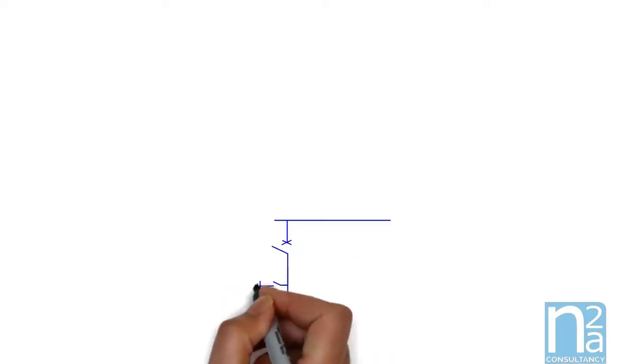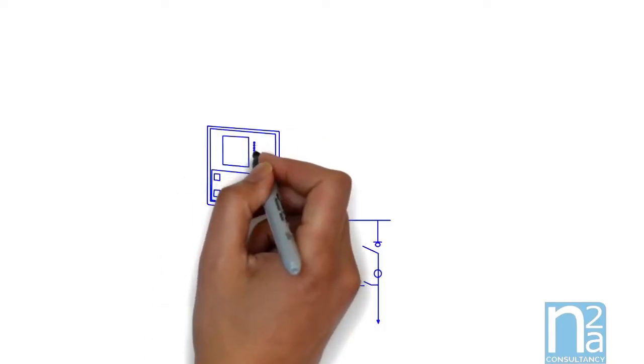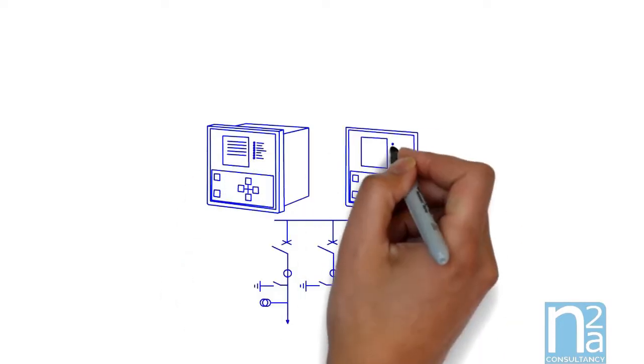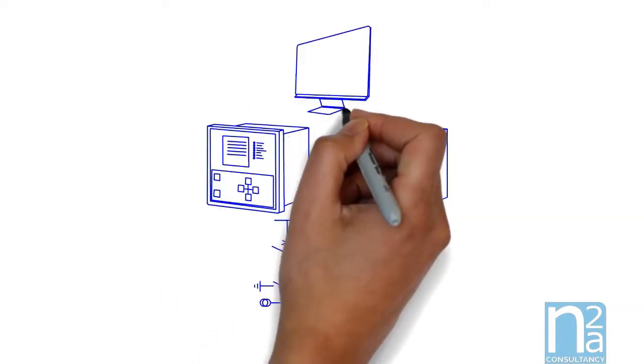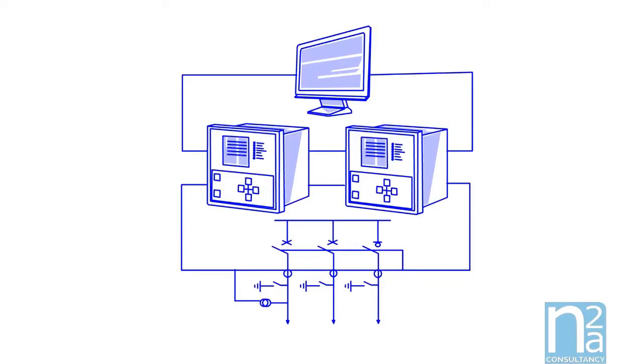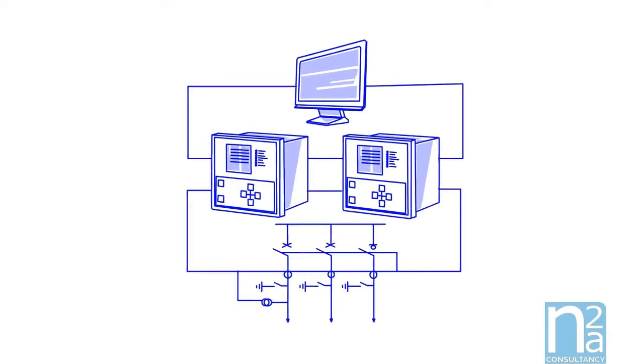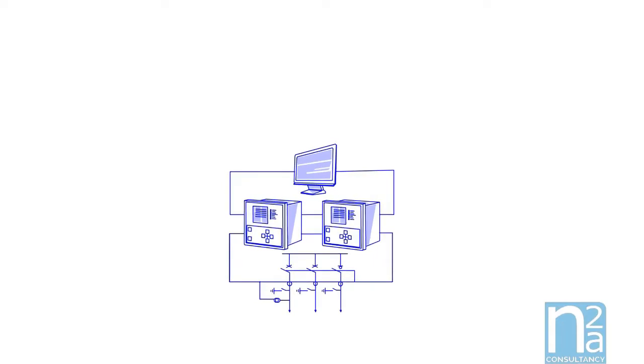The first edition of IEC 61850 standard was called Communication Networks and Systems in Substations, and was focused on communication of power substation level between relays, substation control and switchgear, to provide interoperability between functions from different vendors.